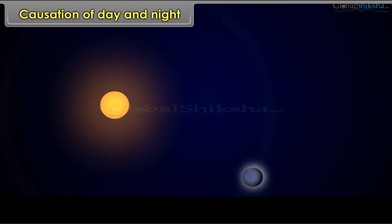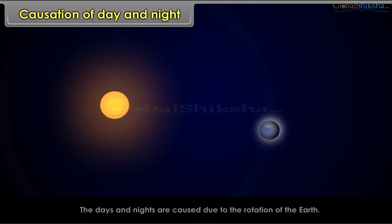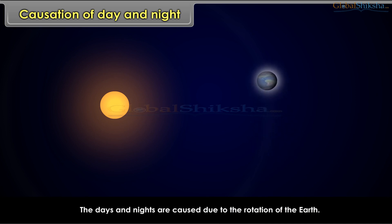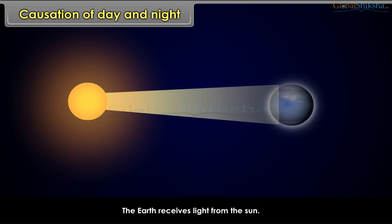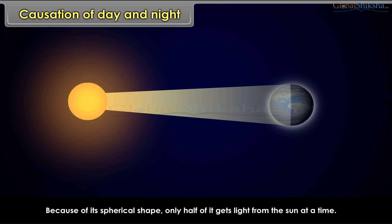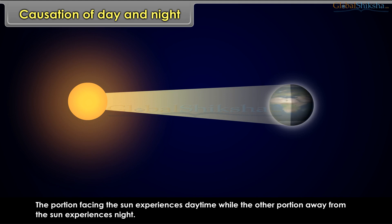The days and nights are caused due to the rotation of the earth. The earth receives light from the sun, and because of its spherical shape, only half of it gets light from the sun at a time. The portion facing the sun experiences daytime while the other portion away from the sun experiences night.